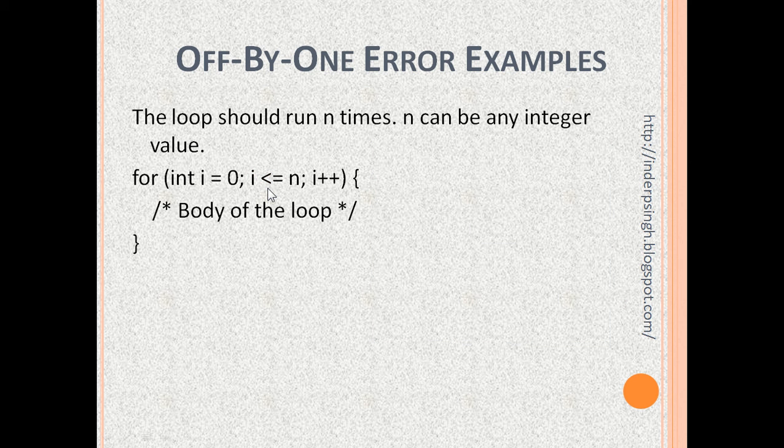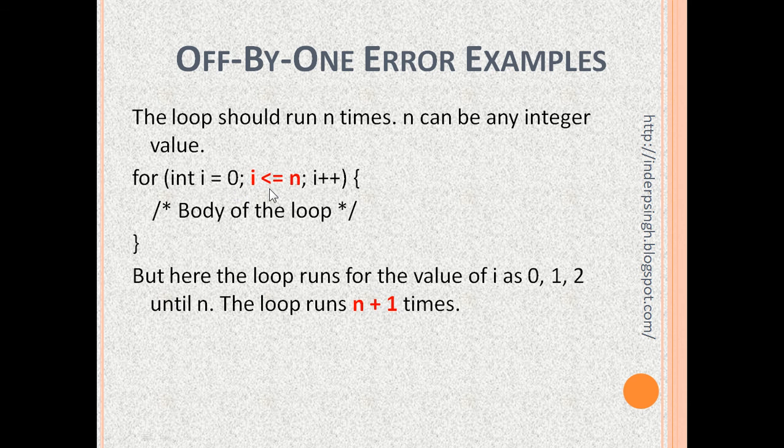Next example. This loop should also run n times. n can be any integer value again. But here, the loop runs for the values of i as 0, 1, 2, and for the value of i as n also. Therefore, the loop runs n plus 1 times. This is because there's an error in the condition i less than or equal to n.